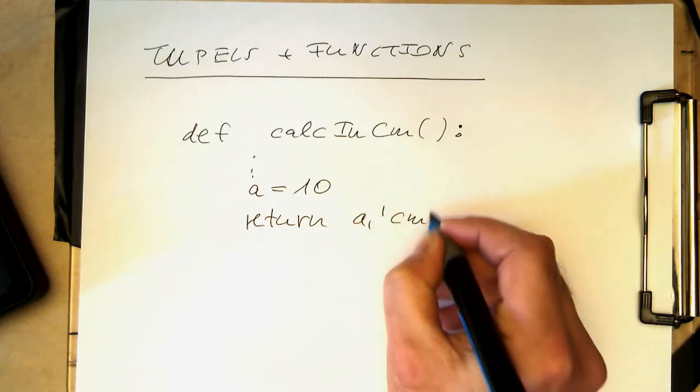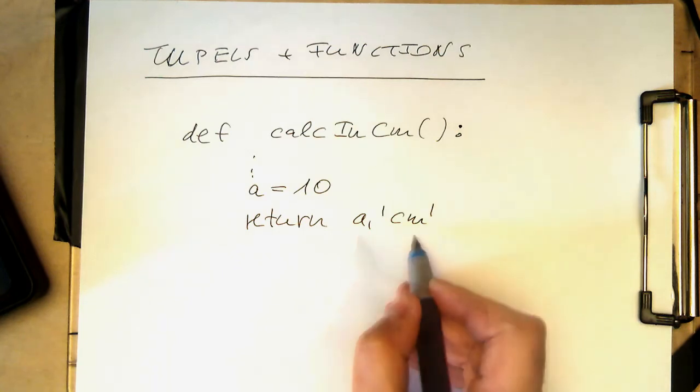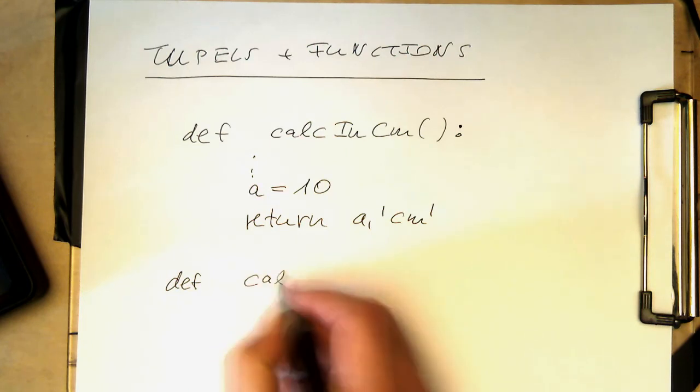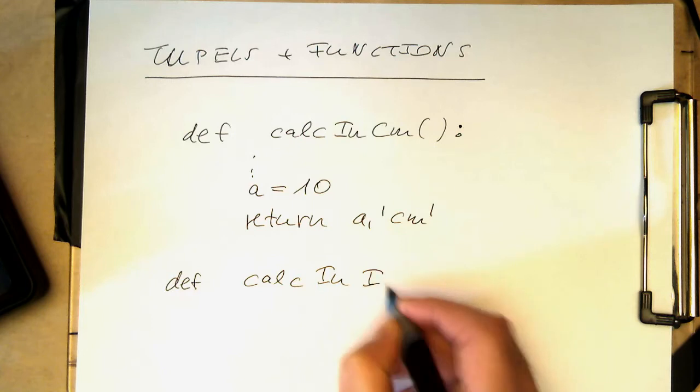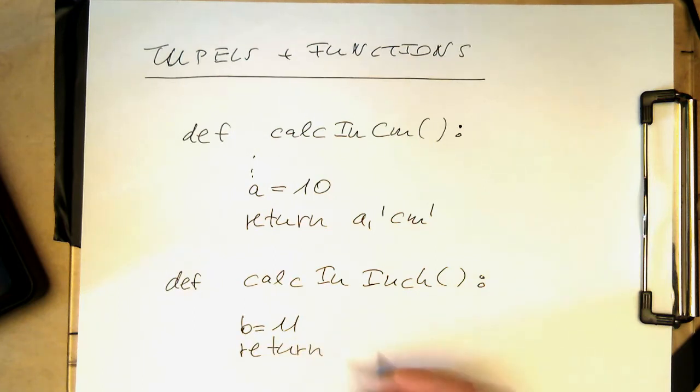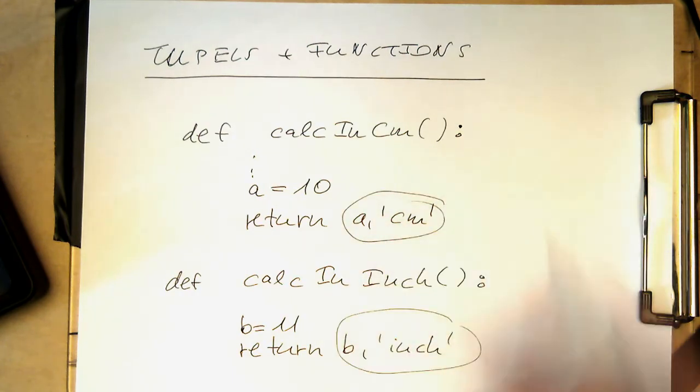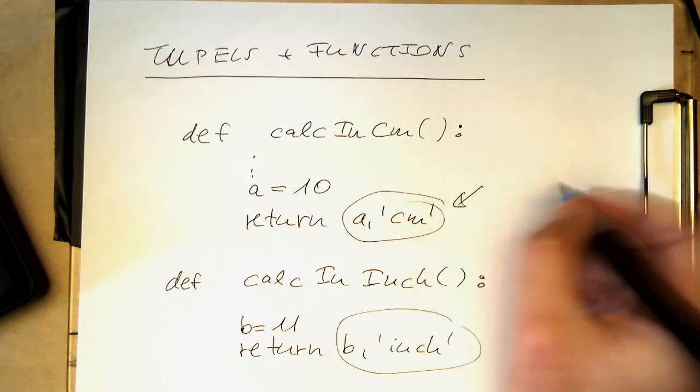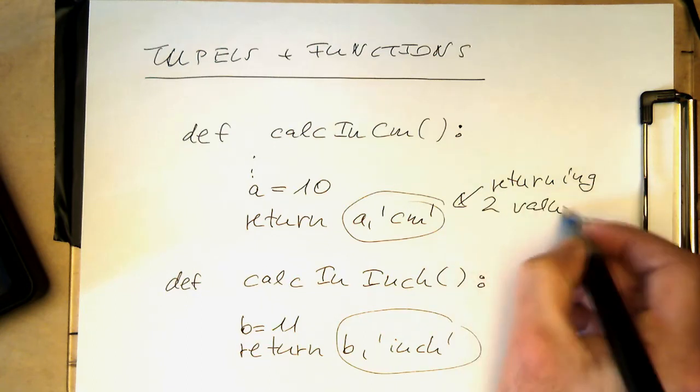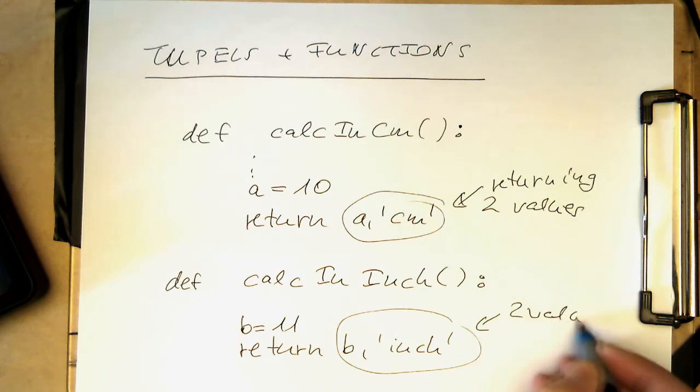So we could just write return a, quotation marks, centimeter. And then just return the value a, and we're also able to return that this is a centimeter. And then maybe further down we have something like calc in inch, and there we have a variable called b equals 11, and then return b comma inch. Quite stupid example. But the point is here that here I'm returning two values at the same time.